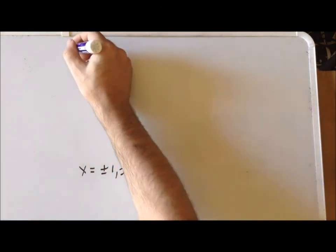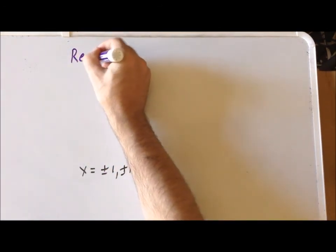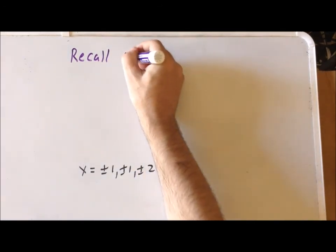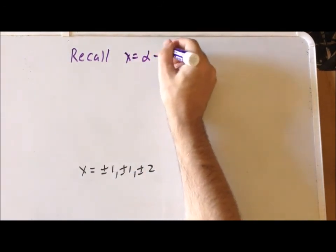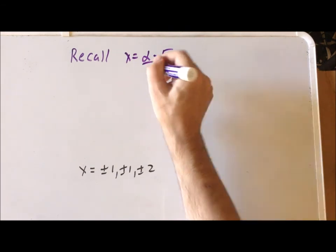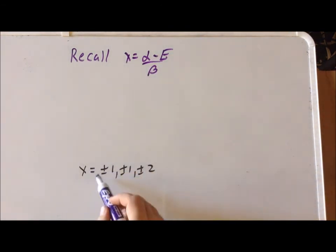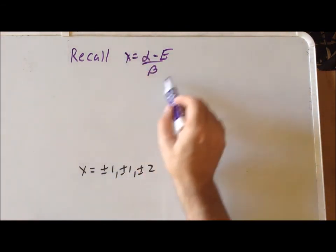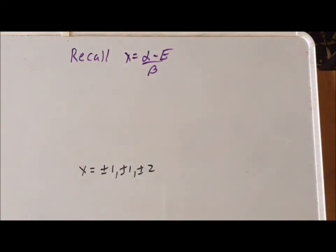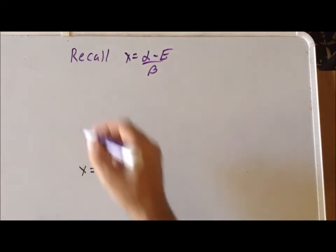So recall where we started, and we had let that x is alpha minus the energy divided by beta. So now if we take the individual values of x, substitute them into this expression, and solve for E, we get the following energies.